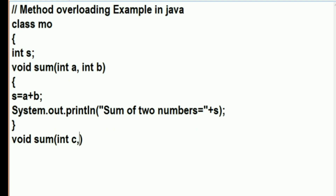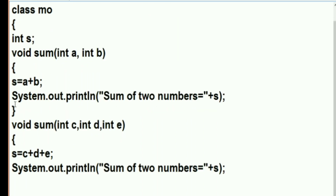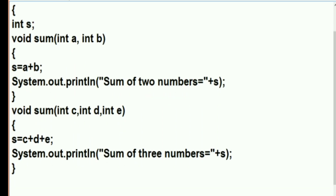You can see the second method is also 'void sum', but the change here is that this sum is getting three arguments: int c, int d, and int e. We have to keep in mind that the method header should not be completely the same, otherwise the compiler will be confused and there will be an error. There should be some difference in the signature. We add c + d + e, and print 'sum of three numbers'.